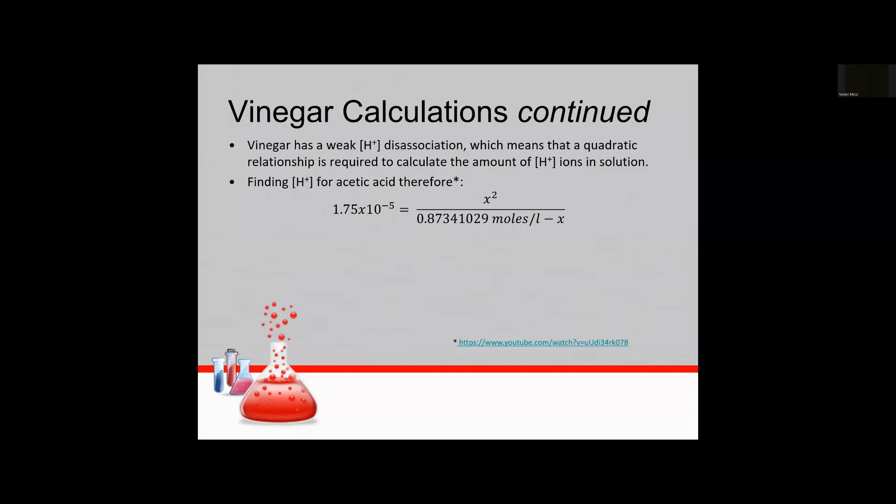And so here it is in standard form. You get x squared plus 1.75 times 10 to the minus 5x minus 1.528 times 10 to the minus 5 equals 0. So the coefficients a b and c there of course in front of x is a 1 and it doesn't show because it's a 1 and then our b factor is 1.75 times 10 to the minus 5 and of course we have our c factor as the constant minus 1.528 times 10 to the minus 5.